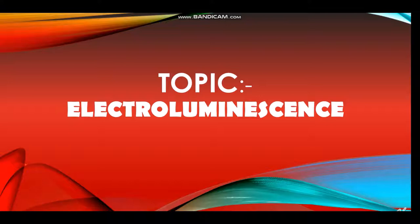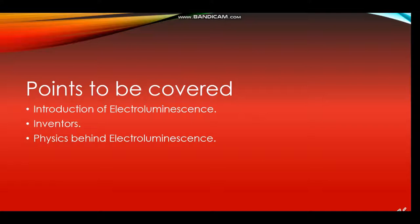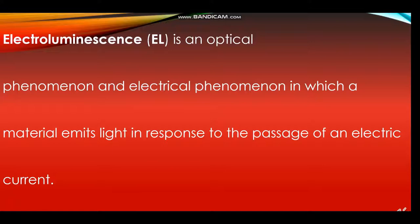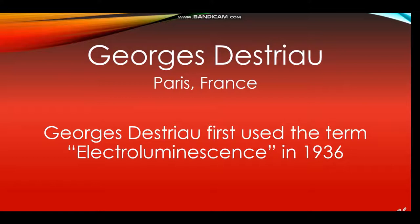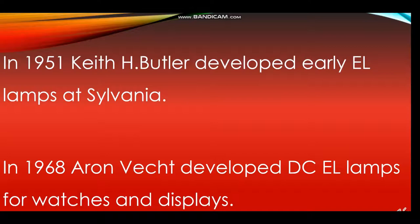The topic is electroluminescence. Points to be covered include an introduction to electroluminescence, its inventors, and the physics behind it. Electroluminescence is an optical and electrical phenomenon in which a material emits light in response to the passage of an electric current. Georges Destrial first used the term electroluminescence in 1936.